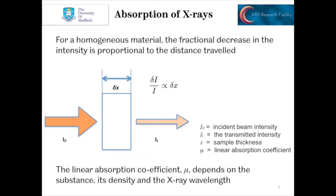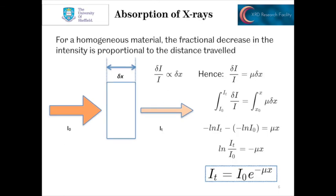For a homogeneous material, a fractional decrease in intensity is proportional to the thickness of the material. This gives rise to the linear absorption coefficient, given the symbol mu, which depends on the substance, its density, and also the wavelength of the X-rays. Going through the derivation of this, we arrive at the equation: IT, the transmitted beam intensity, equals I₀, the incident beam intensity, times the exponential of minus mu times X, where X is the sample thickness.